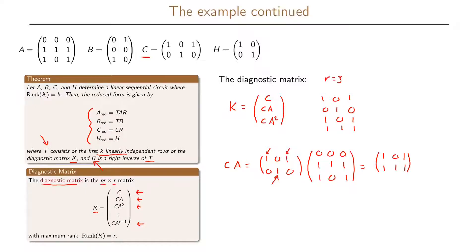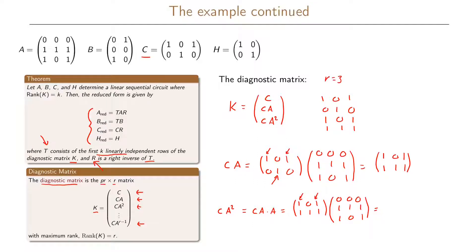For the final two rows of K, we compute C times A squared, which equals (C times A) times A. C times A is [1,0,1; 1,1,1], multiplied by A = [0,0,0; 1,1,1; 1,0,1]. The first row of the result is the sum of the first and third rows of A, giving 1, 0, 1. The second row is the sum of all three rows of A, giving 0, 1, 0.